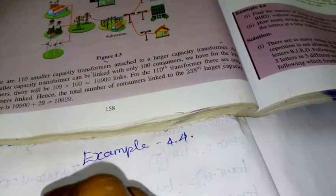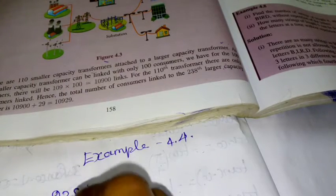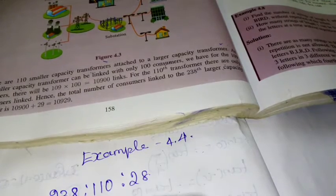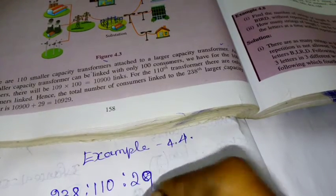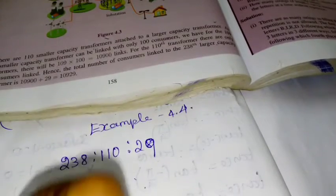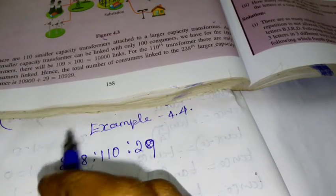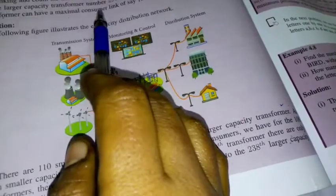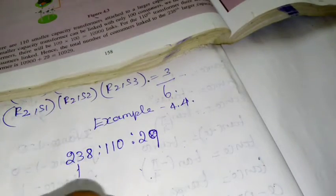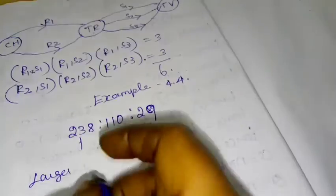First, looking at 238 to 110 to 29. So, 238 is linked to the larger capacity transformer. It is the larger capacity.